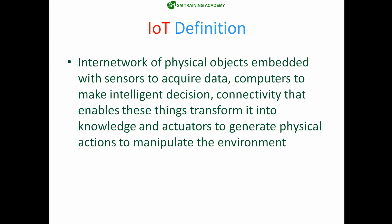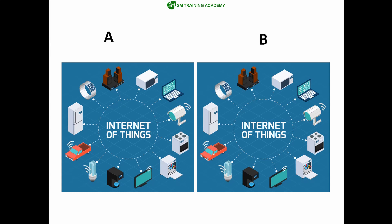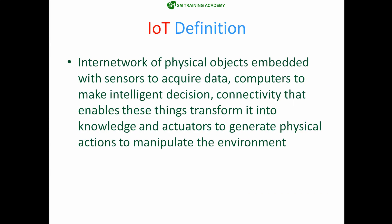On the screen you can see there are two different networks: Network A and Network B. Network A has several components connected to it — a car, fridge, watch, laptop, and CCTV. Similarly, Network B also has several devices connected. If these two networks can communicate with each other — for example, the watch in Network A can send data to the computer in Network B — then these two networks together are termed an internetwork.